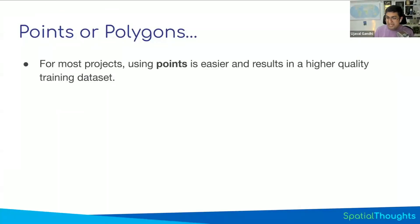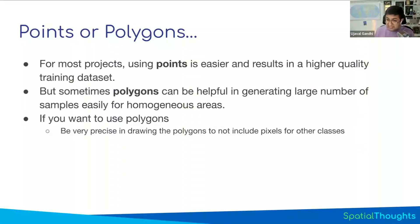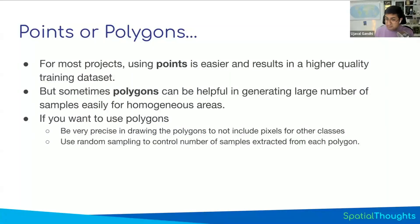Most machine learning algorithms are not very data-hungry. If you can drop points very precisely over land cover you're sure about, that will generate a high-quality model. But sometimes you have a homogeneous region where you want to draw a polygon and sample some pixels from it. If you do this, be very precise in drawing the polygons and use random sampling to extract only the number of pixels you need.